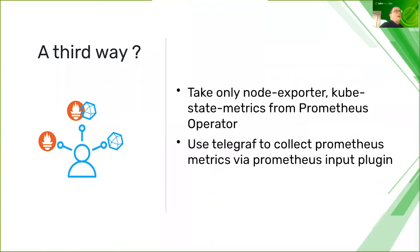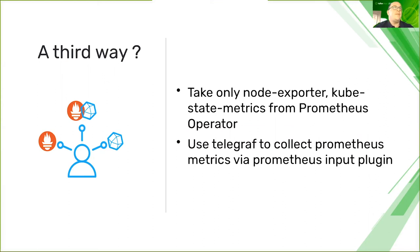Is there a third way? When preparing this talk, I was thinking about using either Prometheus or Telegraf. I noticed there could be a way using both tools. From the Prometheus operator, you could use only the node exporter and kube-state-metrics, which provide metrics in Prometheus format — but you could use Telegraf with the Prometheus input plugin to collect all these metrics. This way, if you really want Prometheus metrics, you can fetch them without installing the whole Prometheus stack, and still rely on Telegraf to push them wherever you want.